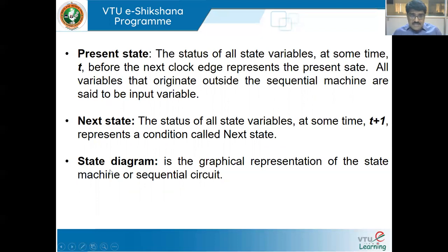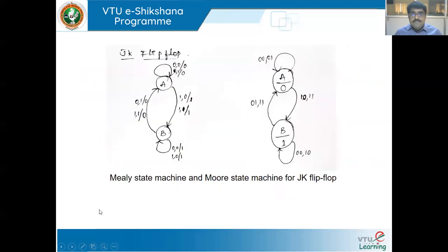State diagram is the graphical representation of the state machine of the sequential circuit. We will see two examples: one is the JK flip-flop and the other is the SR flip-flop. We will try to define the JK flip-flop as a Mealy state machine and also as a Moore state machine.